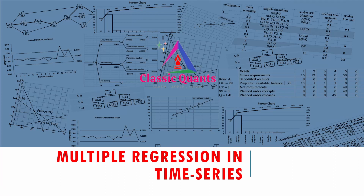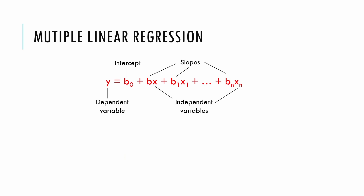This is the 14th video of the series Business Forecasting. In this video we will see how we can use multiple regression in case of time series data. Earlier in one of our lectures we have seen the multiple regression equation, which looks like this: the dependent variable, the intercept b0, slopes b1 up to bn, and independent variables x1 to xn. For those who have not seen that video, the link is in the top right corner.